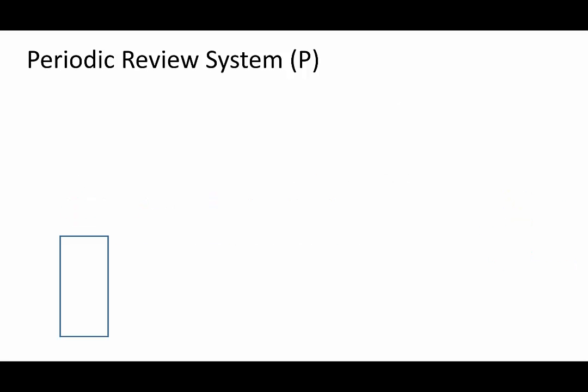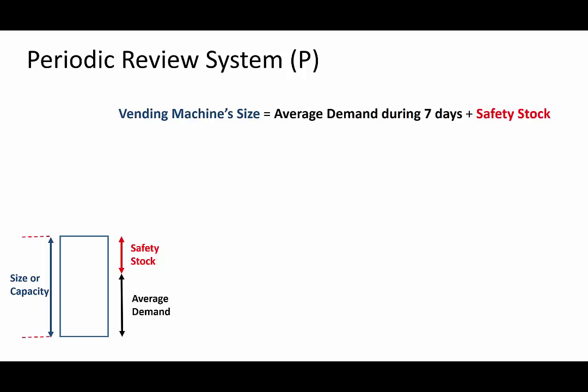Some portion of the vending machine's capacity can be used to address the average demand that happens during these seven days, and the rest of its capacity can be used to address the uncertainty in the demand. This particular capacity is called safety stock — it is a safety measure to guard against the uncertainty of the demand.